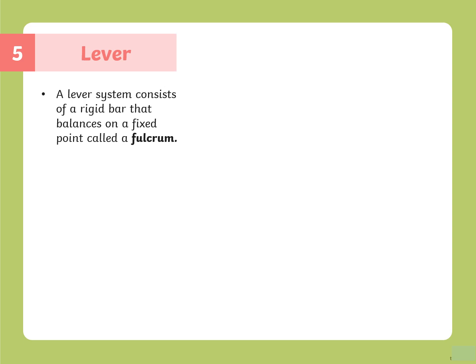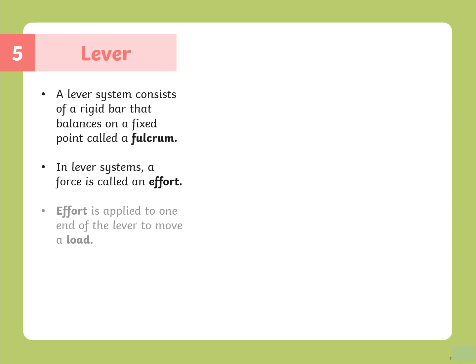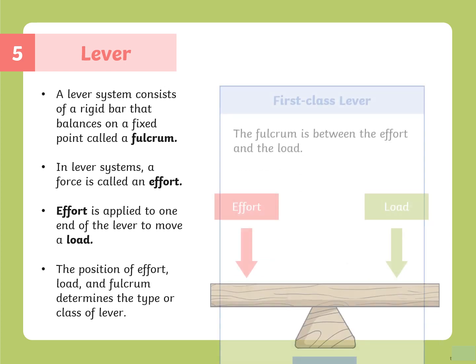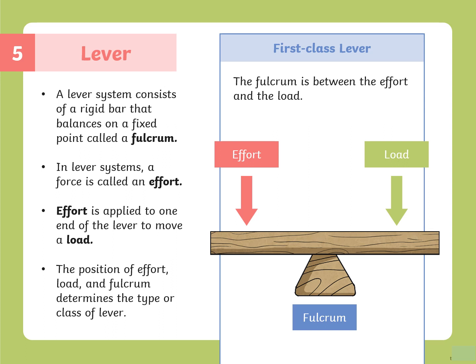The fifth simple machine is a lever. A lever system consists of a rigid bar that balances on a fixed point called a fulcrum. A force called effort is applied to one end of the lever to move a load. The position of the effort, load, and fulcrum determines the class of the lever. In a first-class lever, the fulcrum is in between the effort and the load.